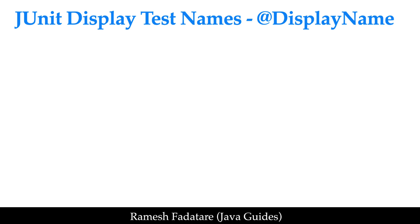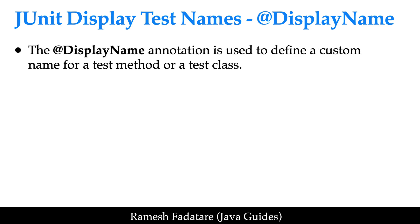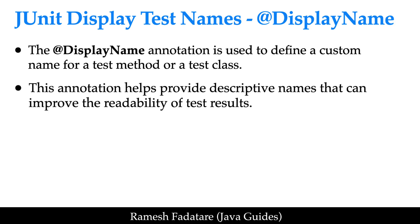Hi everyone, welcome back. In this lecture we will see how to display test names by using the @DisplayName annotation in JUnit. The @DisplayName annotation is used to define a custom name for a test method or a test class. Displaying meaningful test names can make test results more readable and understandable, especially when running a large suite of test cases. This annotation helps provide descriptive names that improve the readability of test results.